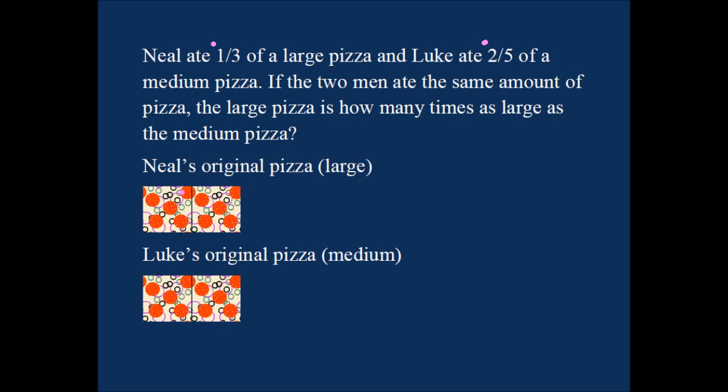Neil had this much pizza, and Luke had this much pizza. Luke's slices came from a medium pizza, and Neil's slices came from a large pizza. According to the question, Neil ate one third of a large pizza. So this has to be one third, the entire pizza must have looked somewhat like this: one third, two thirds, and three thirds. That must have been roughly what the large pizza looked like.